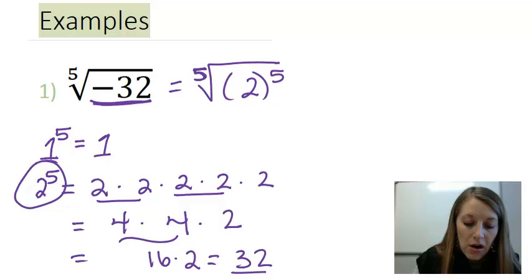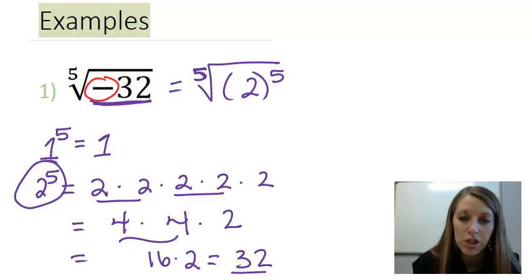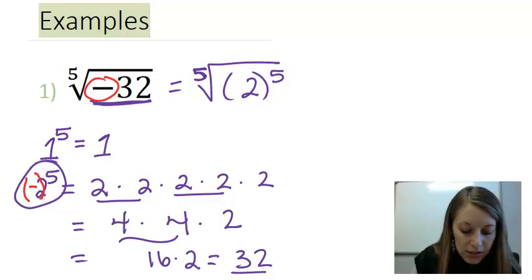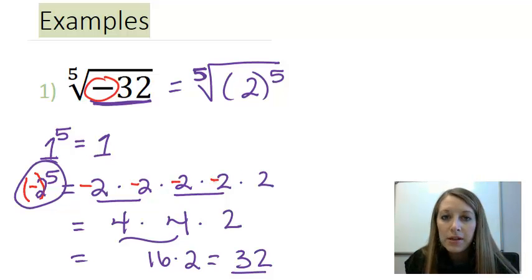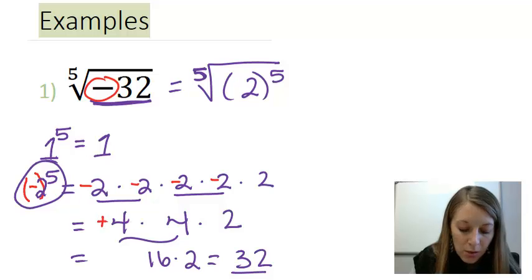But what about that sign? Here, I have a negative 32 on the inside. Let's try and take negative two times itself five times. So, let me put negatives with each of these. Now, if I multiply two negatives, that gives me a positive.